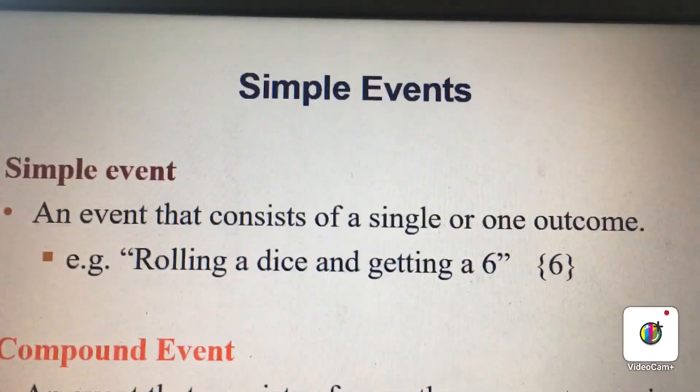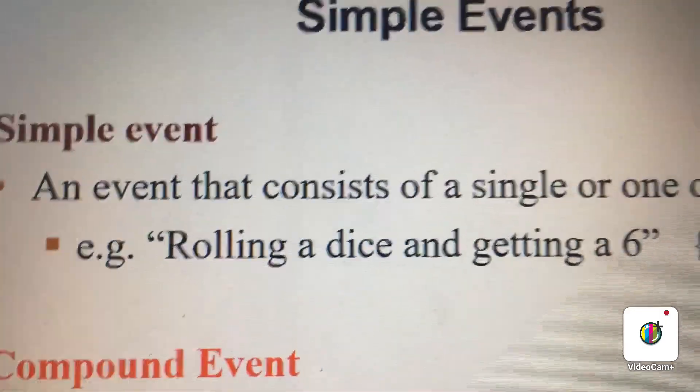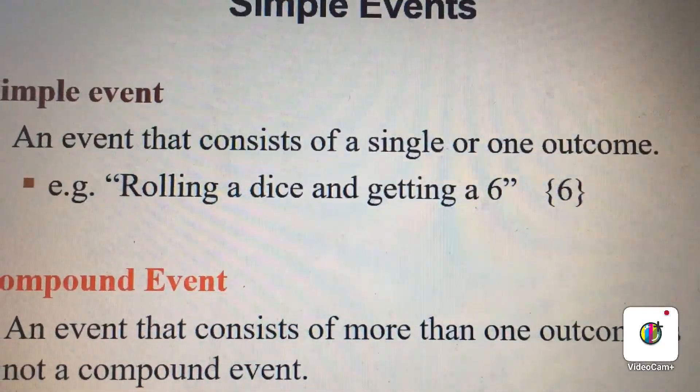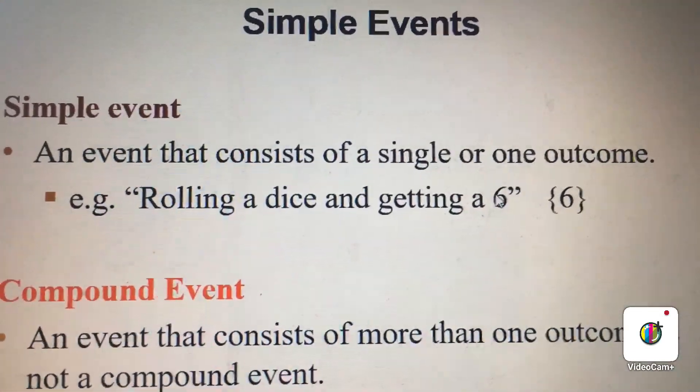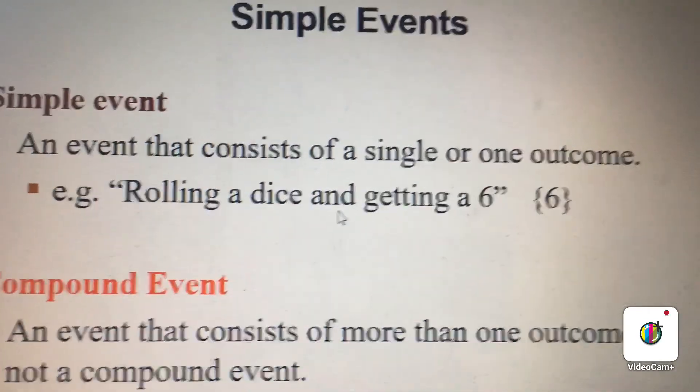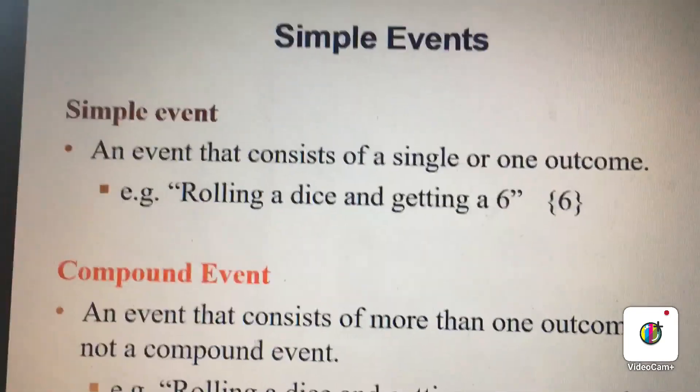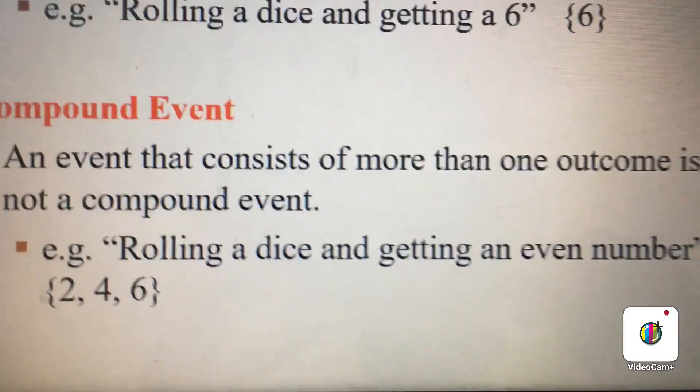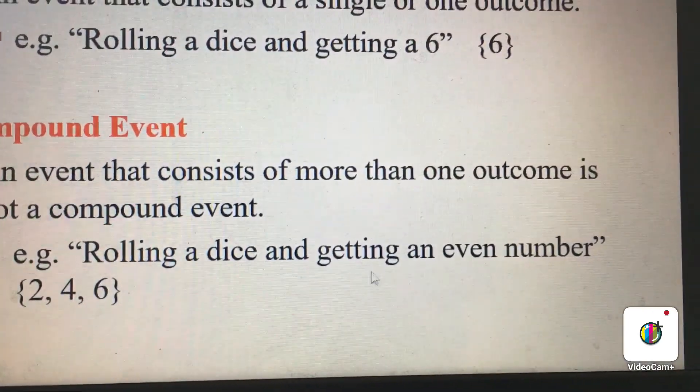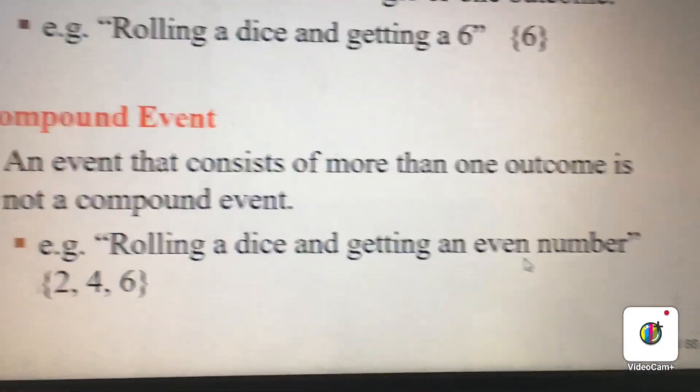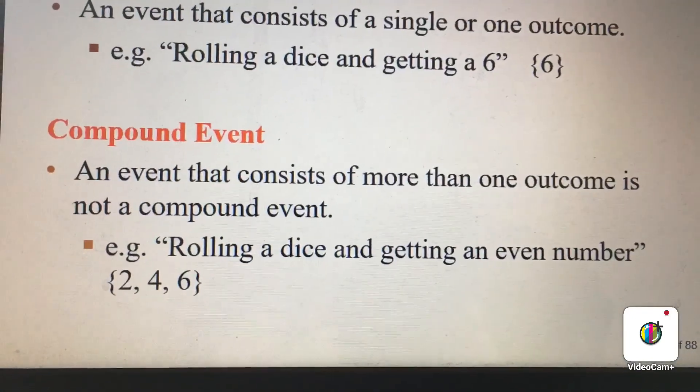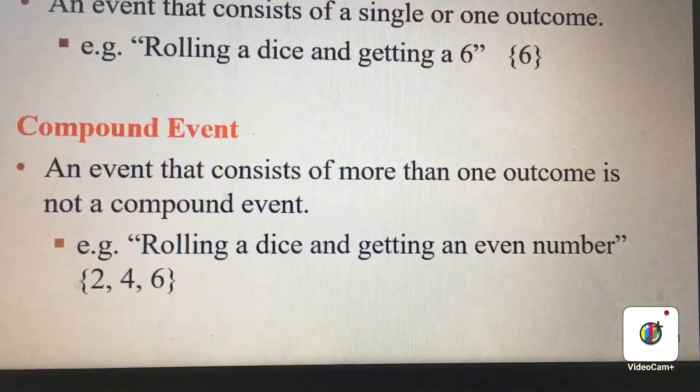The last concept left now are events: simple events. A simple event consists of a single or one outcome. A good example: when you roll a dice, a six might show, and that means the event is six. A three might show also. A one might show. But the bottom line is that it is only one outcome. That's why we call it a simple event. But for compound event, we have more than one outcome. We roll a dice and an even number shows up. What are all the even numbers in the dice? We have three even numbers: 2, 4, 6. So the outcome is more than one, and because of that, we call it a compound event.